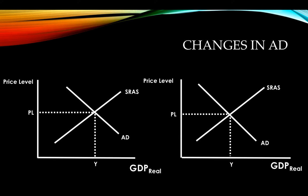Let's look at changes in aggregate demand. Our graphs are labeled correctly — real GDP on the horizontal axis, price level on the vertical axis, the aggregate demand curve is labeled, and the short-run aggregate supply curve is labeled. When aggregate demand decreases, it shifts to the left. We label the new curve AD1, mark the new equilibrium price level with a downward arrow, and show the new equilibrium output decreasing. With output decreasing, we know unemployment is increasing.